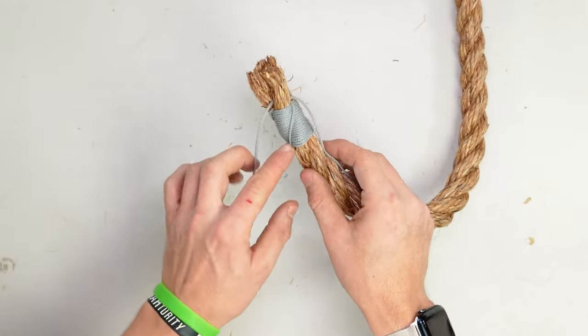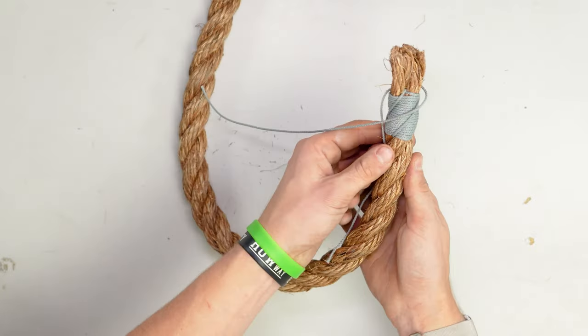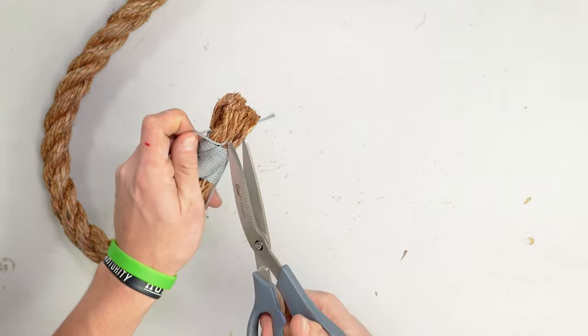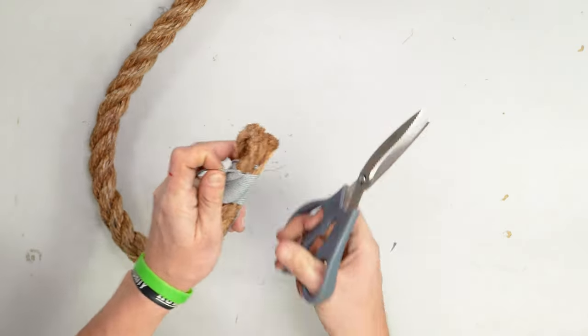Once you have that knot tied these strands should follow the strands of the rope like so and then you can just take your scissors and cut these off as closely as you can.